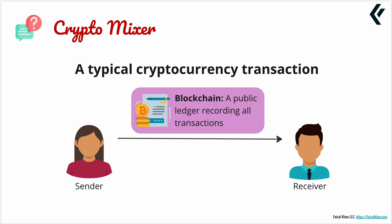In a typical cryptocurrency transaction, there is the sender's address, the receiver's address, the amount being traded on that blockchain, and a timestamp. That is what a public ledger looks like. If this person sends it to four other people, all that information is recorded. If this person receives it from three people and then sends value by breaking it up to 22 other people, all that information is recorded.